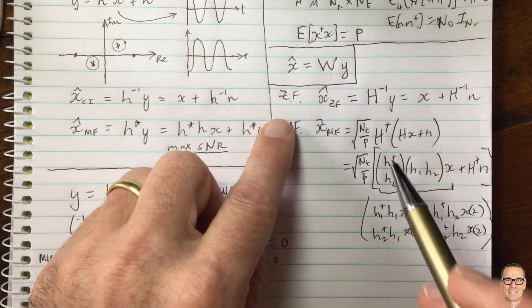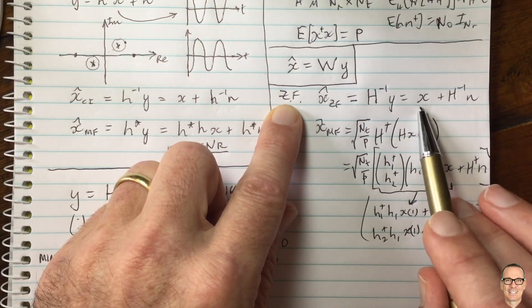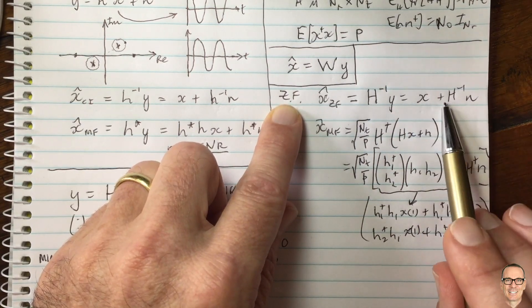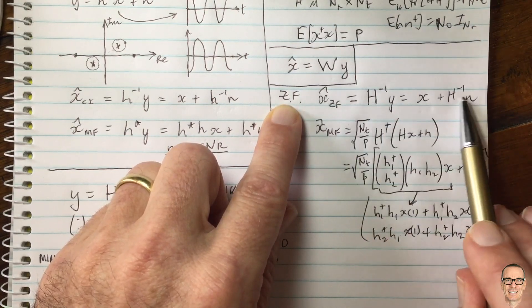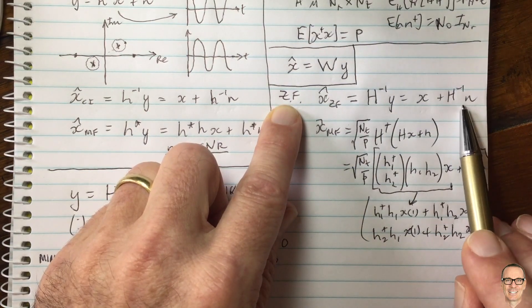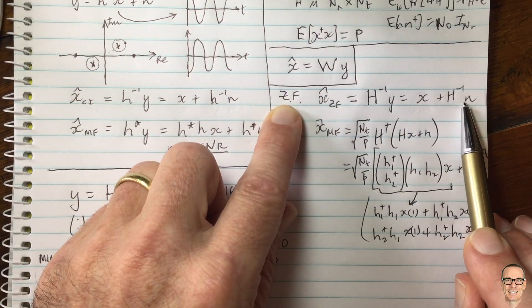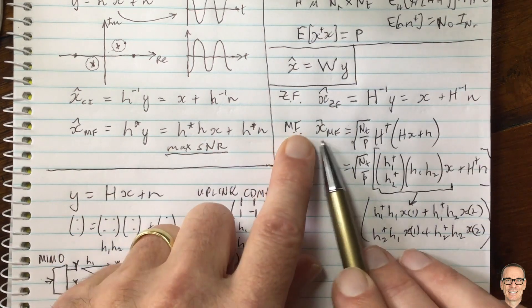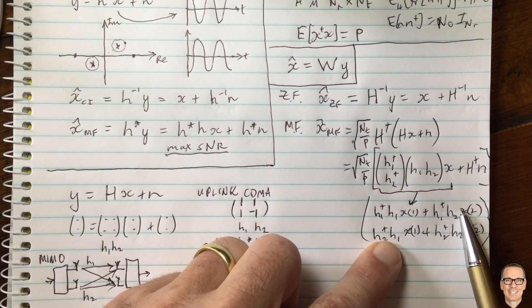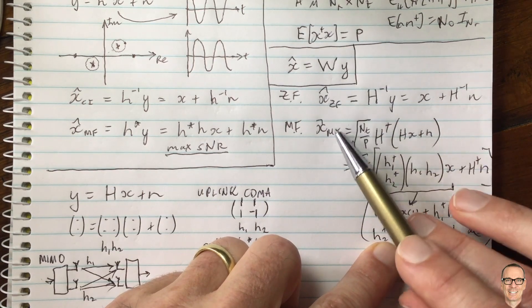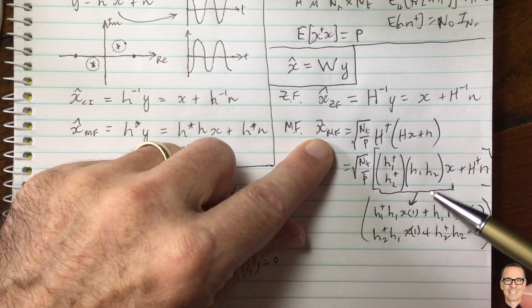To recap: zero forcing is good in that it zeros out all interference, but it suffers from a signal-to-noise ratio problem due to noise enhancement, especially if the channel inversion is ill-conditioned. The matched filter gives a good signal-to-noise ratio, but if you have interference, that causes a problem. These are two extremes of a scenario — so how do you pick between them? That's where minimum mean squared error comes in.